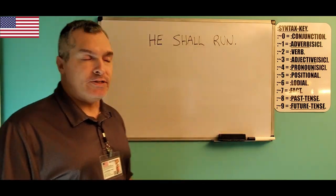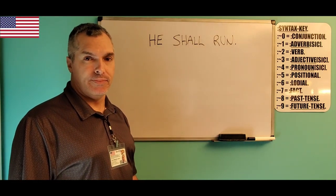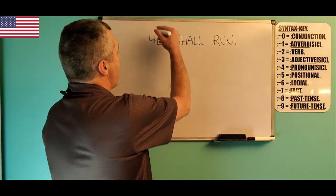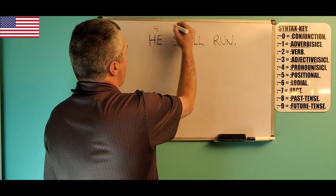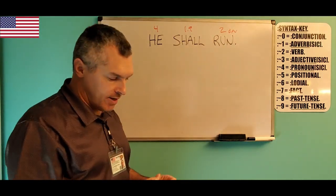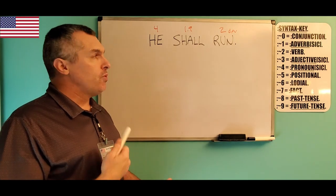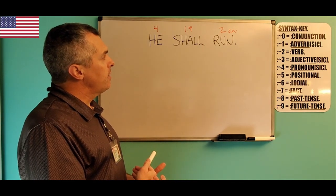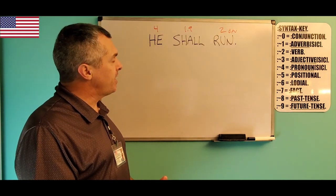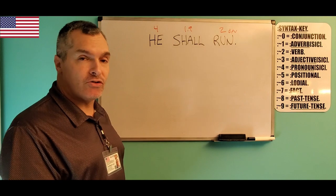And we're going to give you a very simple example right here: 'He shall run.' Now, in the past, I may have syntaxed it like this — DPV means dangling participle verb. However, with this new and laser-like pinpoint accuracy mechanic of finding out whether a word is tangible contract or non-tangible contract, this is not correct.